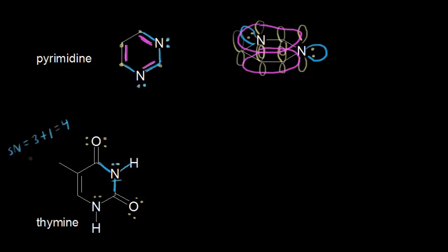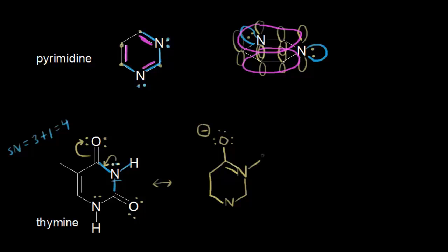The answer is that this nitrogen is actually not sp3 hybridized. It has a lone pair of electrons that are delocalized — not localized to the nitrogen — meaning we can draw a resonance structure for thymine. This lone pair on the nitrogen can move in to form a pi bond between the nitrogen and that carbon, which pushes the electrons off onto the oxygen. Drawing the resonance structure: the lone pair forms a double bond between nitrogen and carbon, the top oxygen picks up an extra lone pair giving it a negative 1 formal charge, and the nitrogen is still bonded to a hydrogen.